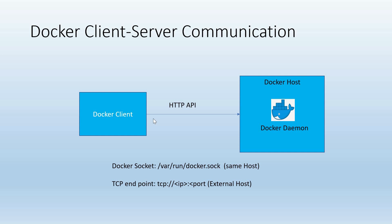The Docker client can be a Docker CLI or any client which implements this API. For example, I can write my client application using a Python or a Go client or a Java application. Here, we would consider two cases. In the first case, we would see how the Docker client communicates with the Docker daemon on the same host. In the second case, we would see how the Docker client communicates with the Docker daemon from another host.